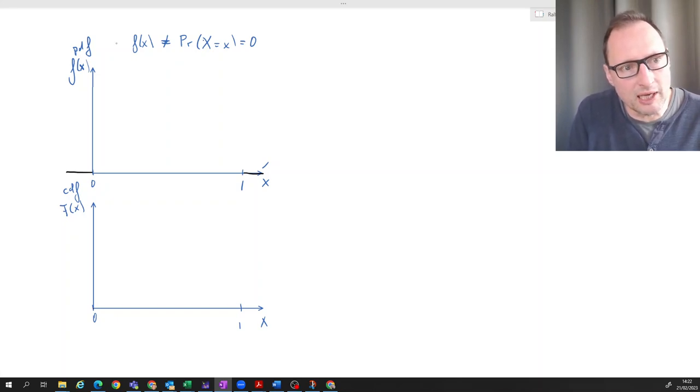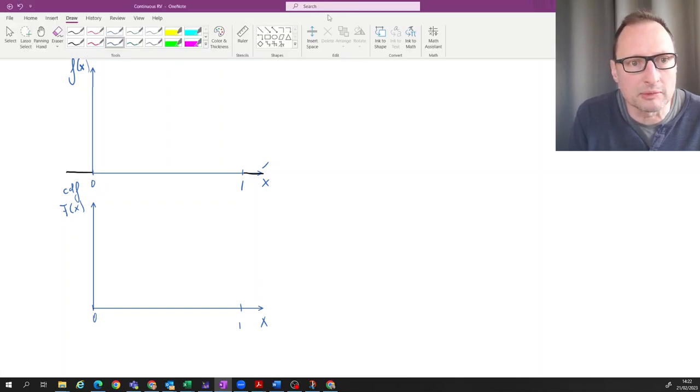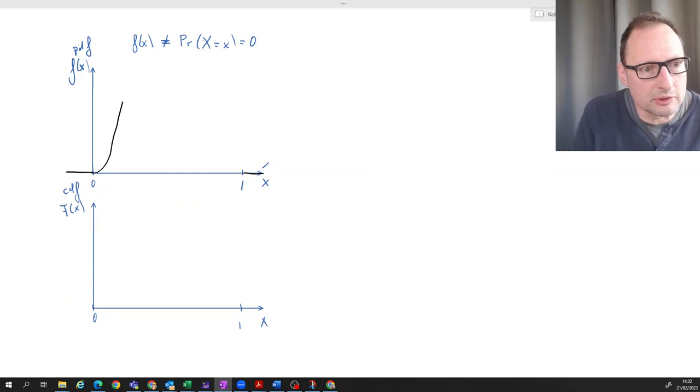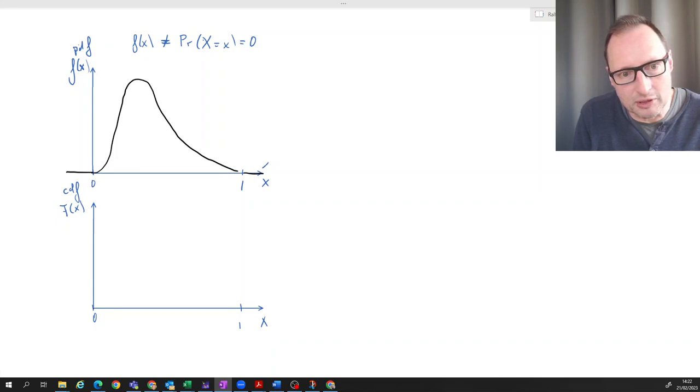Remember, for a PDF, it gives us a graphical representation of the probability for an interval. So let's draw a PDF here. Let's say it starts very slow, but then it goes very steep up. And then perhaps there is quite a bit of probability over here, but it goes down to zero. Okay, so let's say it's this one. That's the PDF.